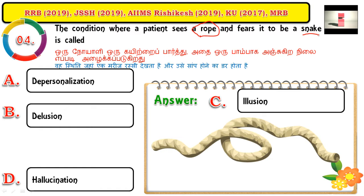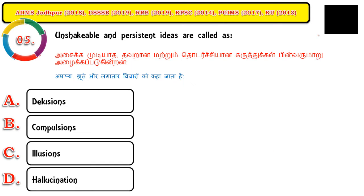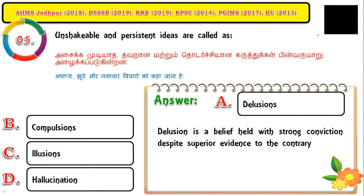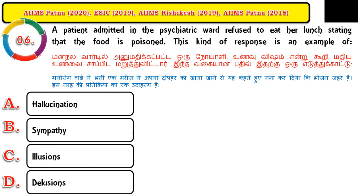Question number five: unshakable and persistent ideas are called delusions. Delusion is a thought-related problem — it is a belief held with strong conviction despite superior evidence to the contrary.